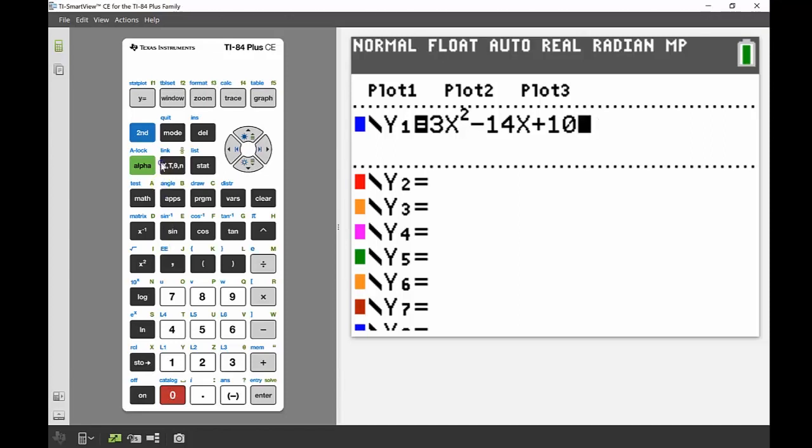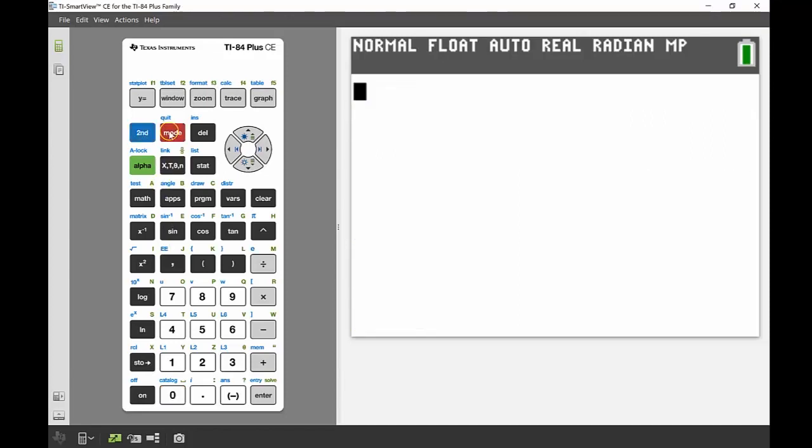I'm going to quit out of my function editor, so second and mode to quit. In here I'm going to find my acceleration, my initial acceleration of my particle. For those of you studying calculus at the moment you'll know that your acceleration is your derivative of your velocity, but if not that's the connection there. So I'm going to find the derivative of that velocity equation at my initial time, when time is equal to zero.